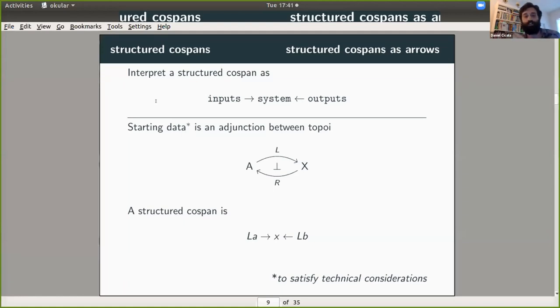And so to actually make this formal, we need to have some starting data. And so my starting data is going to be an adjunction between topoi. So again, we're going to offer an interpretation for each of these parts of this adjunction. So I'm going to think of A as having objects as my interface types. X, I'm going to think of as a topos whose objects are my system types. And then L is going to sort of allow me to have the interface types from A communicate with the system types. And then R is going to take a system and return its maximal interface. And so given this starting data, a structured cospan is just a cospan inside of X that looks like this right here.